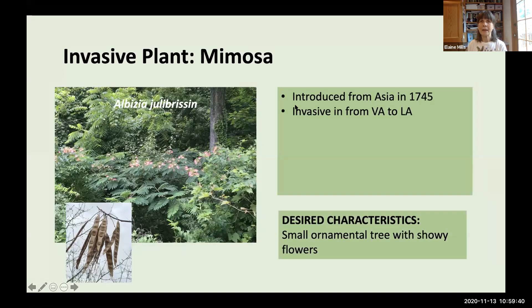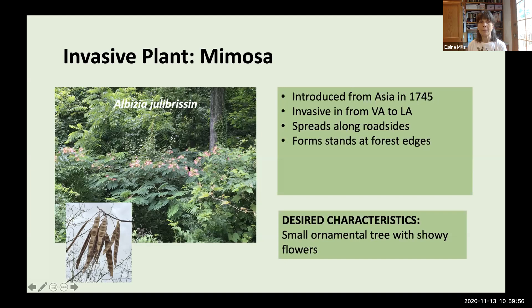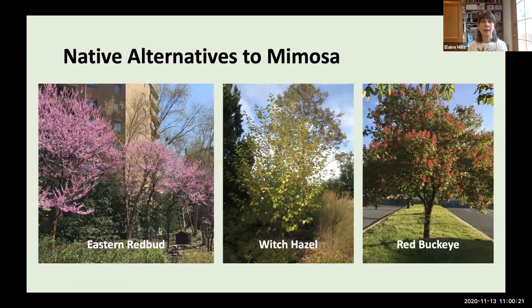Another very popular tree, mimosa, was introduced from Asia in the 1700s and is unfortunately invasive from Florida to Louisiana. It spreads along roadsides and forms huge stands at forest edges. Seeds can be viable for years, can be carried by water long distances, and it re-sprouts when cut back. For an ornamental tree with showy flowers, I recommend native species: Eastern Redbud, Witch Hazel, and Red Buckeye.